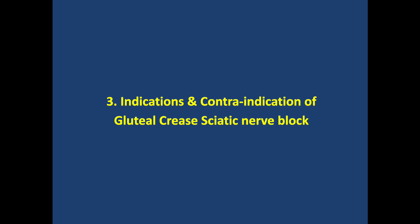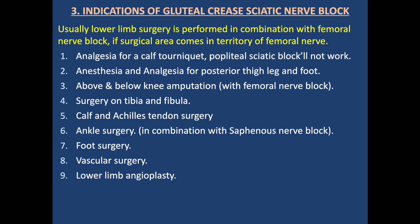Indications of the Gluteal Crease Sciatic Nerve Block: Lower limb surgery can be safely performed under sciatic block in combination with femoral nerve block. Analgesia for the posterior thigh requires a gluteal crease sciatic block, as a popliteal sciatic will not cover it. Indications include posterior thigh, leg and foot analgesia; above and below knee amputation with femoral nerve block; tibia and fibula surgery; calf and Achilles tendon surgery; ankle surgery; and foot surgery. Lower limb angiography can also be performed with this block.